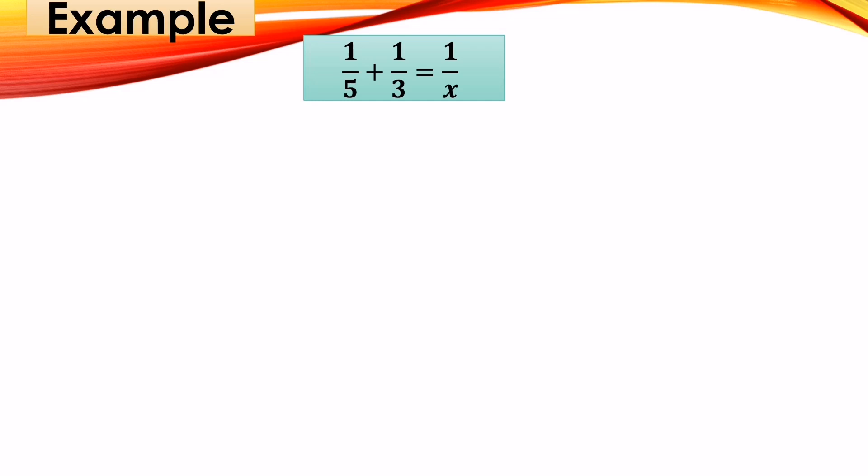So again, this is our equation: 1/5 plus 1/3 equals 1/x. We need to solve for the rational equation. Remember, we need to find the LCD. The LCD is 5 times 3 times x, which is 15x. Then we need to multiply both sides by our LCD.